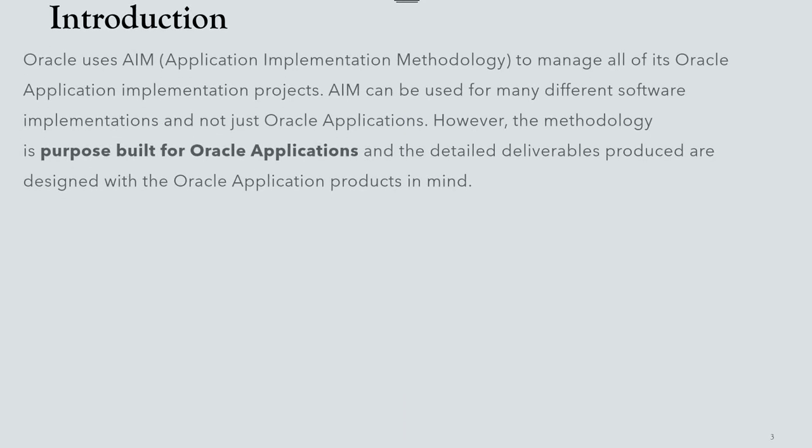Let's start with the definition of AIM. Oracle uses the Application Implementation Methodology to manage all of its Oracle Application implementation projects. AIM can also be used for many different software implementations — not just Oracle Applications, but other software like SAP, Microsoft, web development, and others. However, the methodology is purpose-built for Oracle Applications, and the detailed deliverables produced are designed with Oracle Application products in mind.